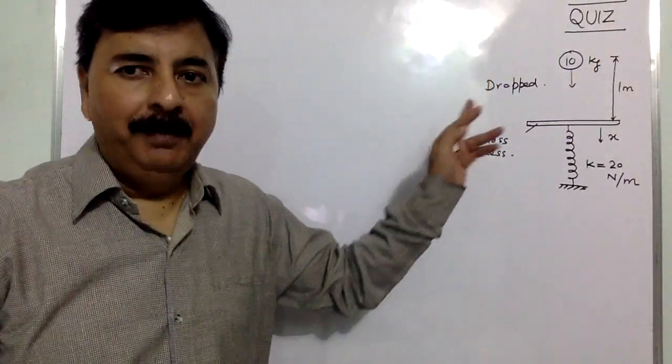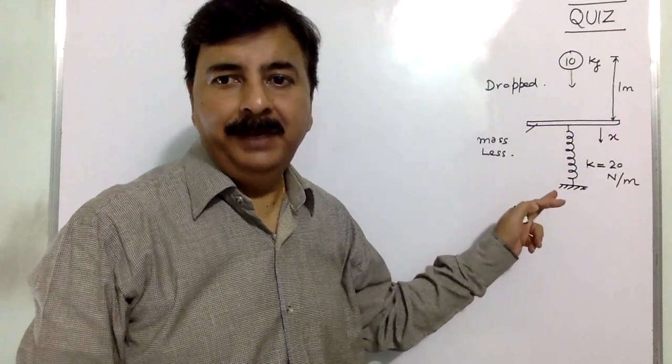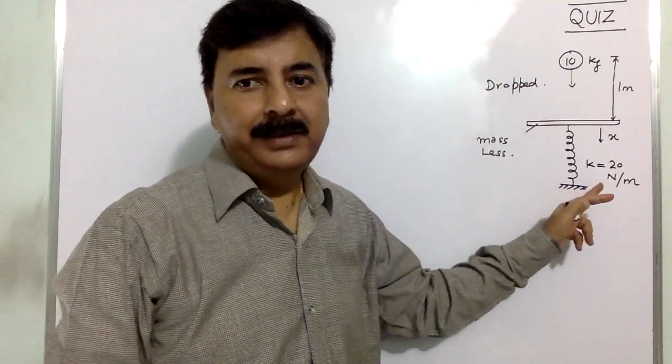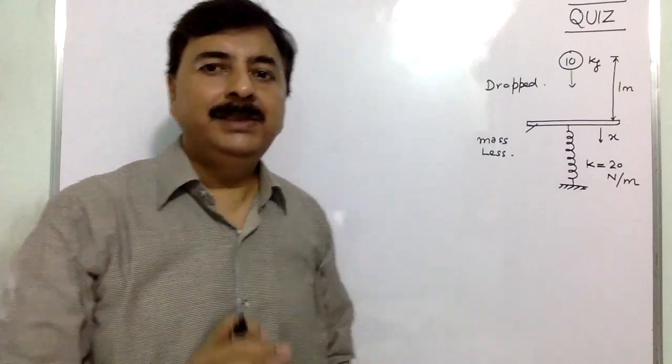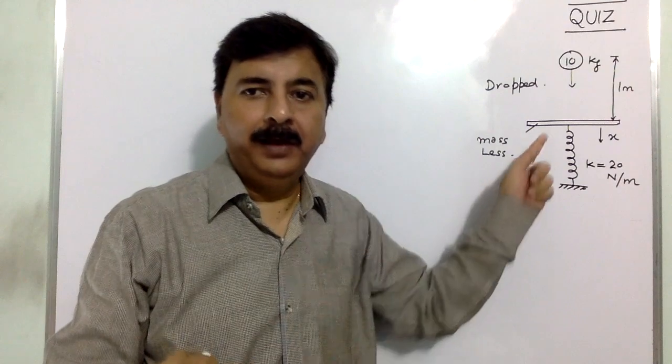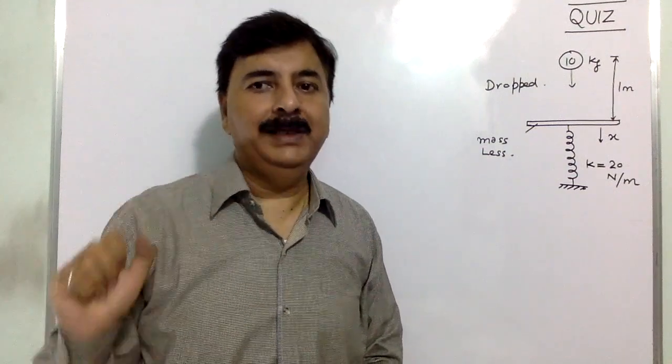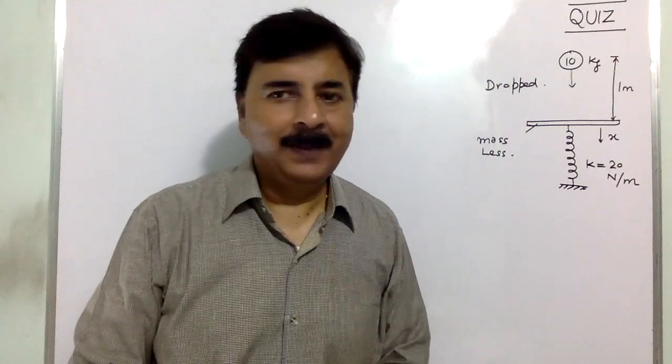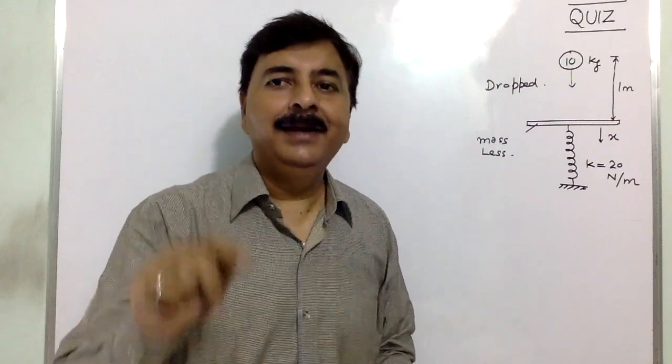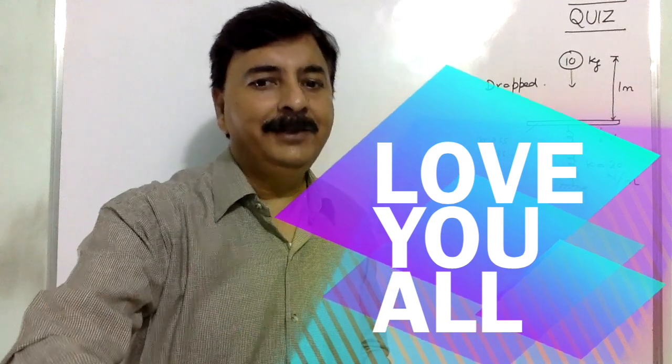Question is simple: a body of mass 10 kg is dropped on a massless platform connected with a spring. The other end of the spring is fixed. It is dropped from a height of 1 meter. The spring constant is 20 newton per meter. You have to find how much the spring will get compressed. This is today's question. Wish you all the best. Bye bye, see you tomorrow with some good questions and good concepts. Till then keep on sharing my DNA, your DNA. Wish you all the best and if you have not subscribed yet, please do subscribe. Bye bye.